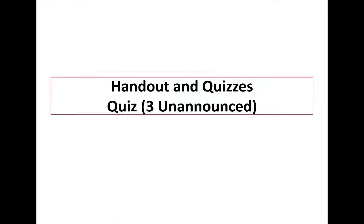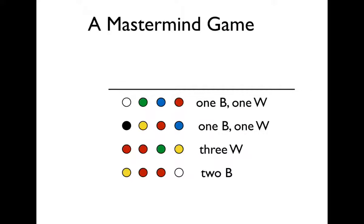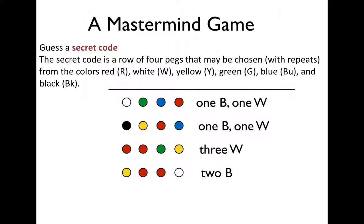To begin with, let's see a problem — a mastermind game. What it says is that we need to find a secret code which must be of four pegs. The pegs are mentioned as white, green, yellow, and so on. It should be four pegs with repetition, but the peg color should be either red, white, yellow, green, blue, or black.